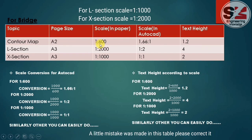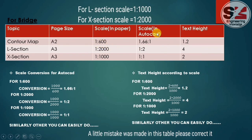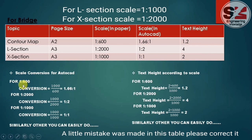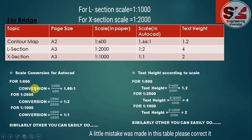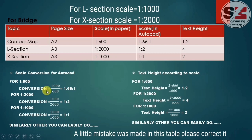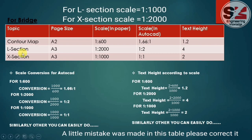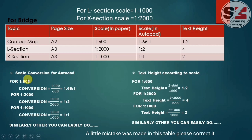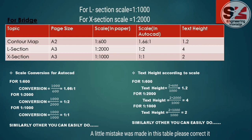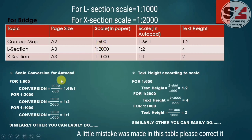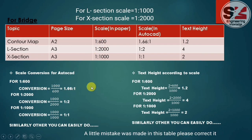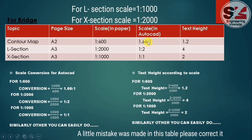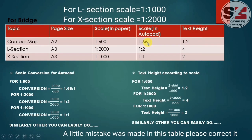We have to convert the scale of 1:600 for entering in AutoCAD using this formula — scale conversion for AutoCAD: conversion equals 1000 divided by that scale. Here, 'that scale' means the scale in which you want to print the drawing. For 1:600, after converting we get 1.66:1. This value we enter in the layout tab of AutoCAD to print the final drawing.